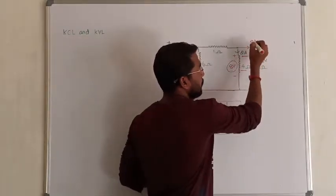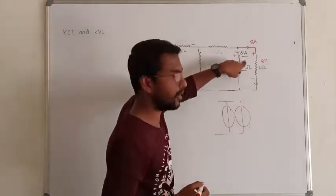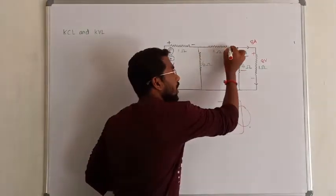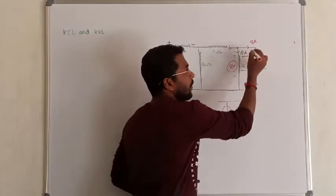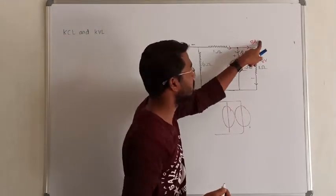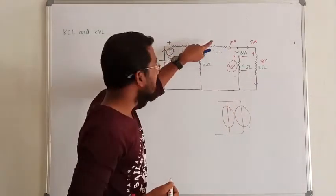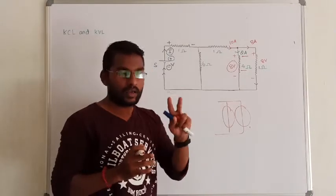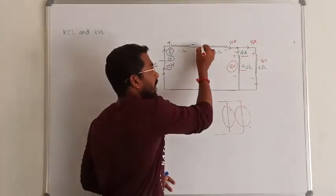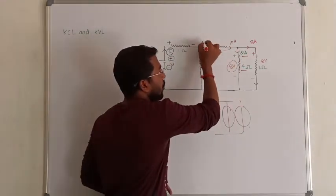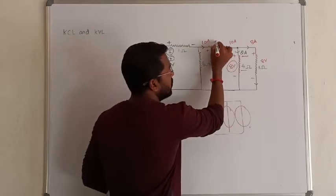Let us apply KCL here. At the junction node, the incoming current is 2A and another line carries 8A. According to KCL, incoming current must equal outgoing current. So 2A plus 8A gives 10A. For the next resistance, it is a passive element — current entering point is plus, leaving point is minus. The current through it is 10A. The voltage drop is 10A into 1 ohm, which is 10 volts.